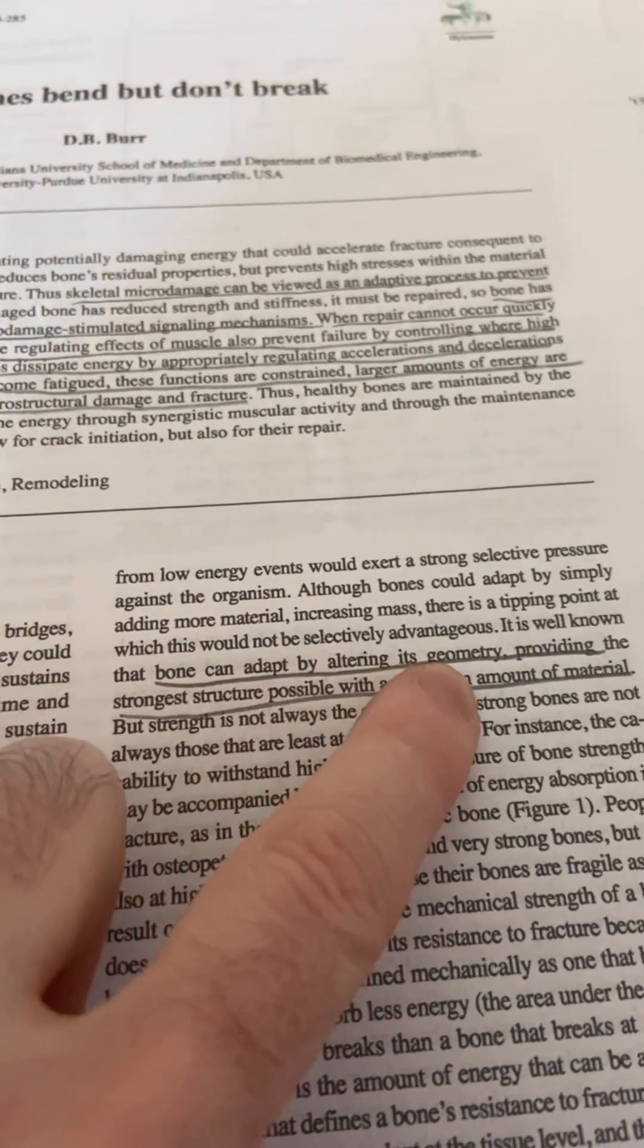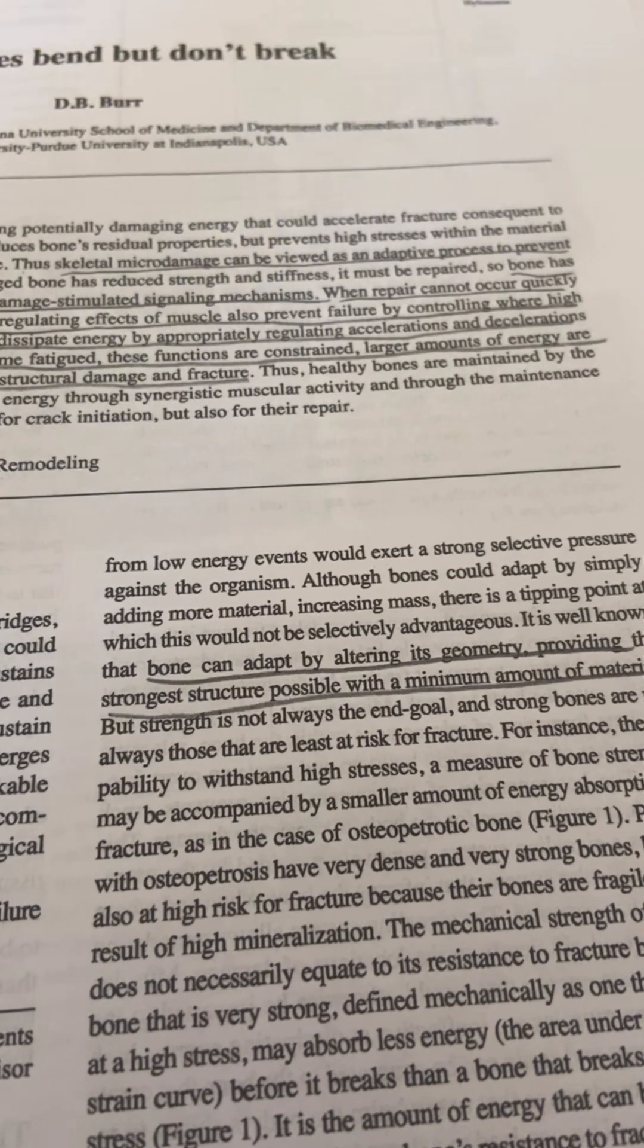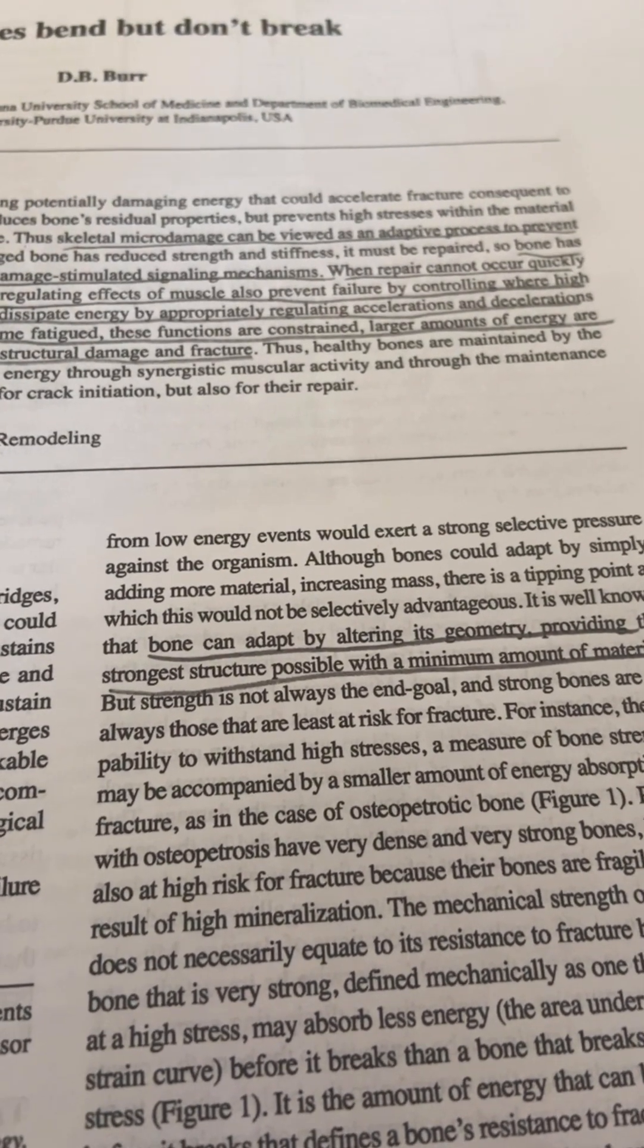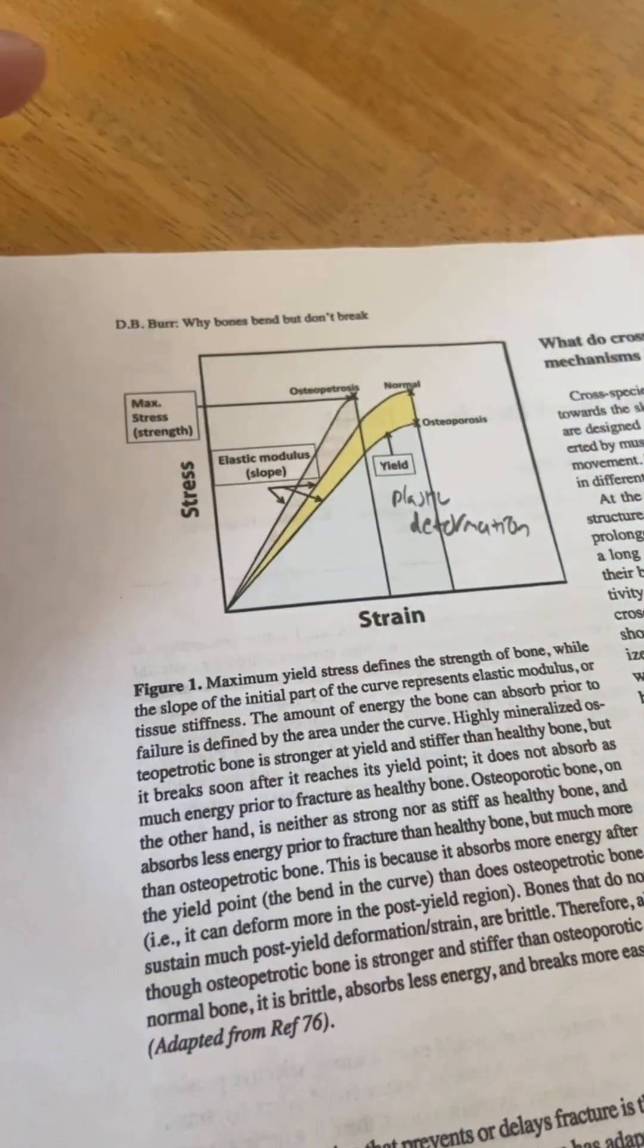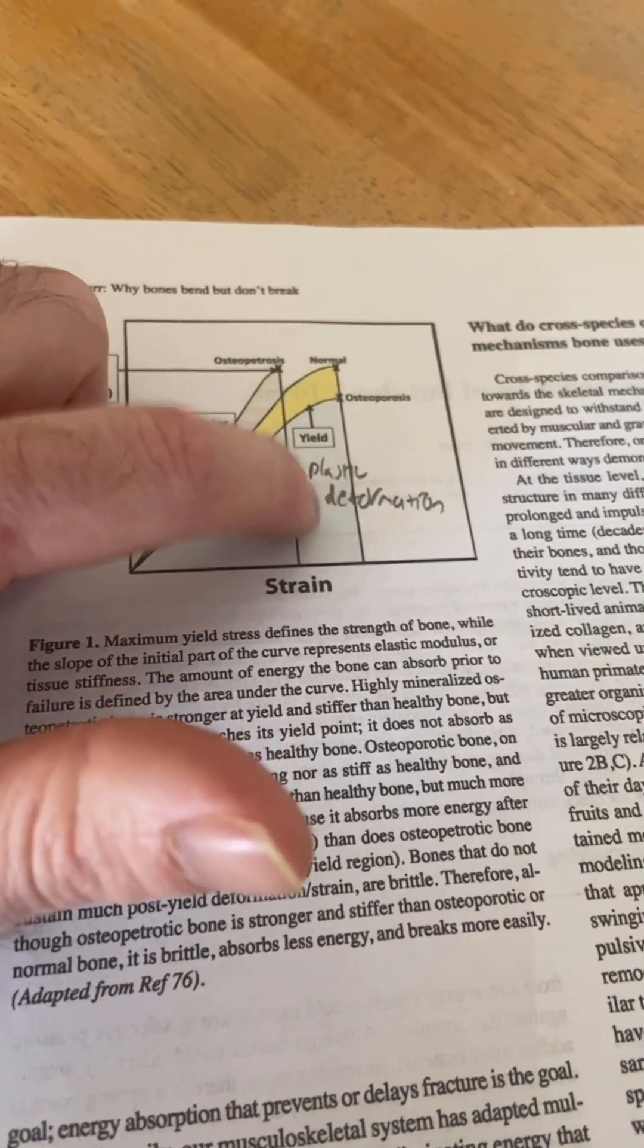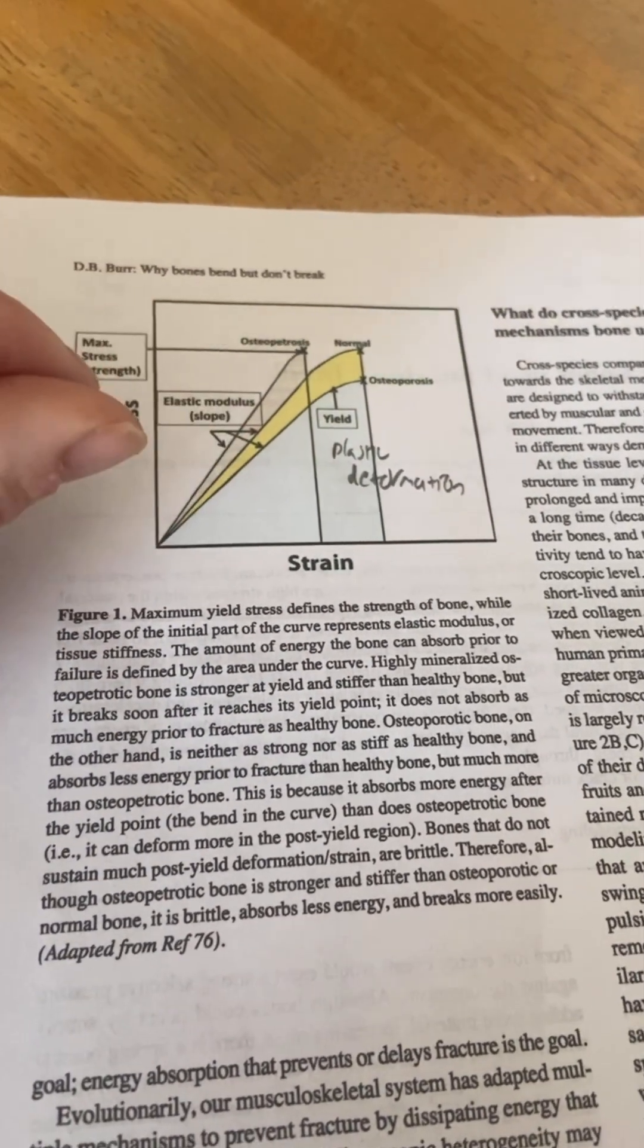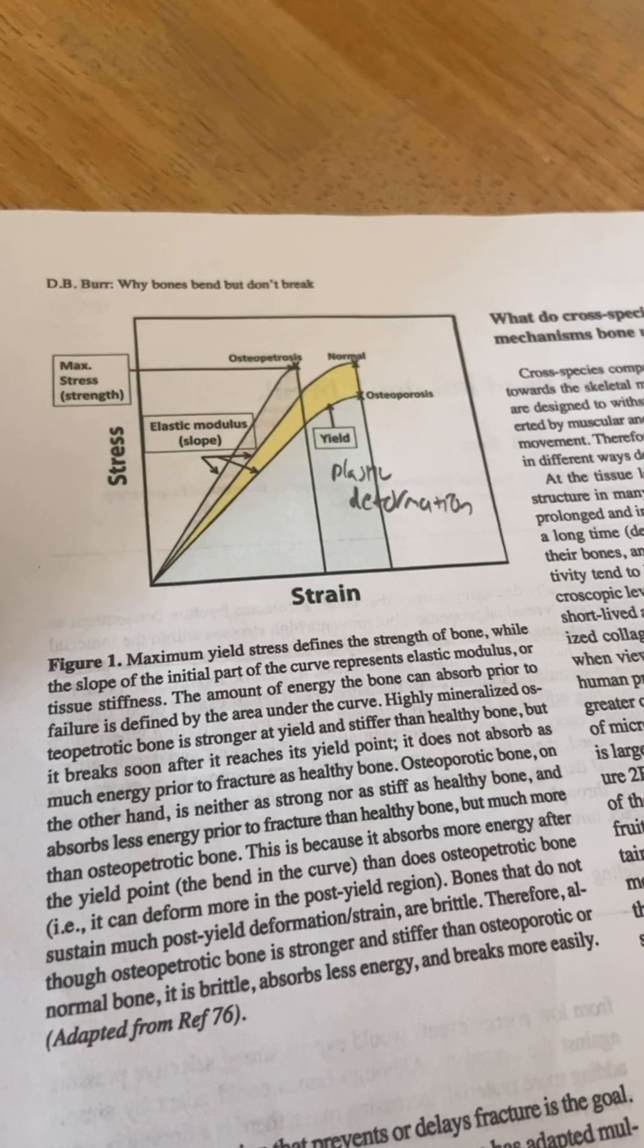Bone can adapt by altering its geometry, providing the strongest structure possible with a minimum amount of material. Now the thing is that this paper is referring mostly to trabecular bone and not cortical bone. I wanted to go over this sentence because this image right here basically proves that growing taller is possible. Because it says that if you pass this yield strain, you can permanently change the shape of the bone through plastic deformation. The challenge is getting in that plastic deformation made for the cortical bone in order to grow taller.